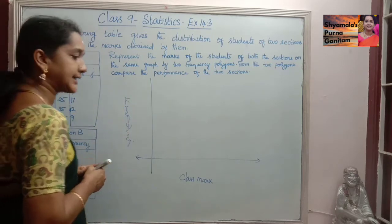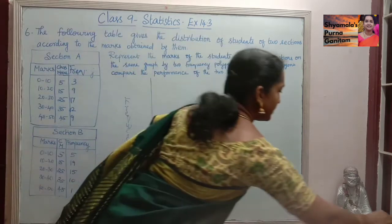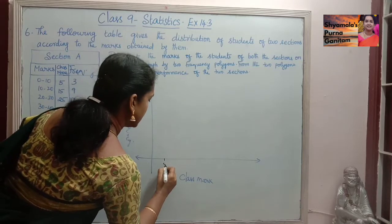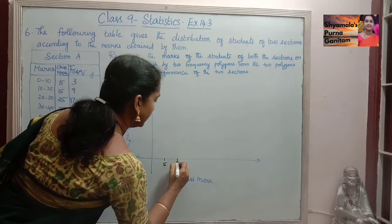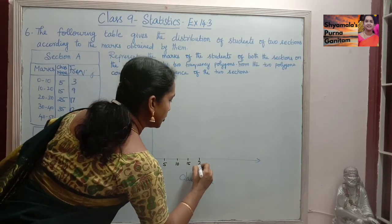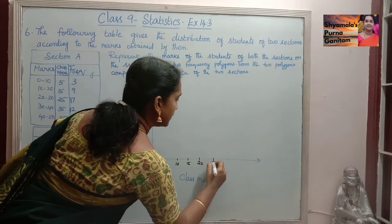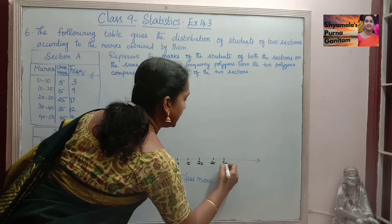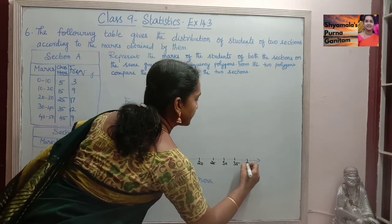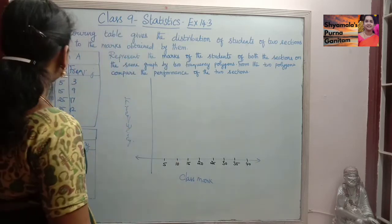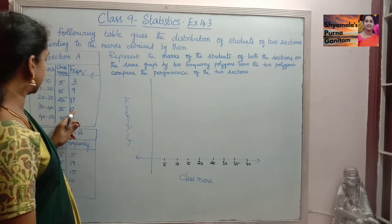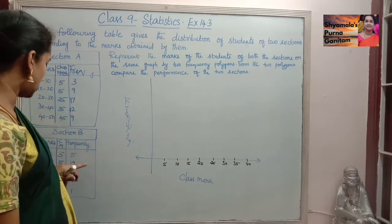On the x-axis we mark values 5, 10, 15, 20, 25, 30, 35, 40. On the y-axis we take values 2, 4, 6, 8, 10, 12, 14, 16, 18, 20, since the maximum frequency is 19.